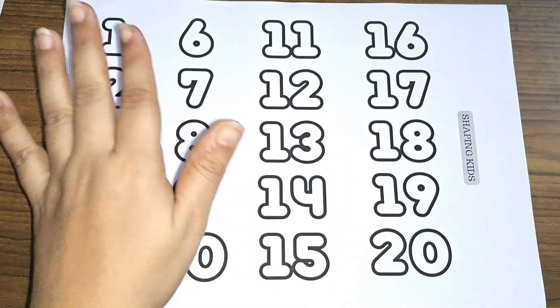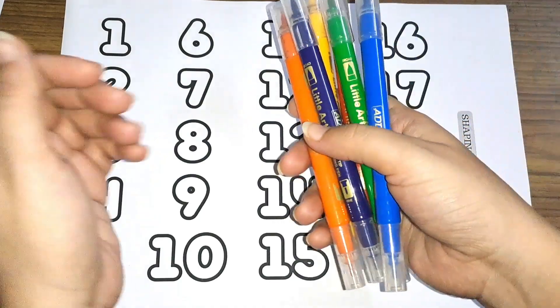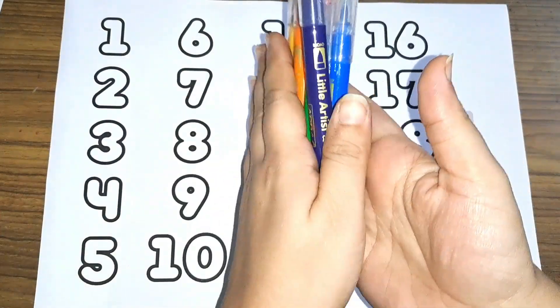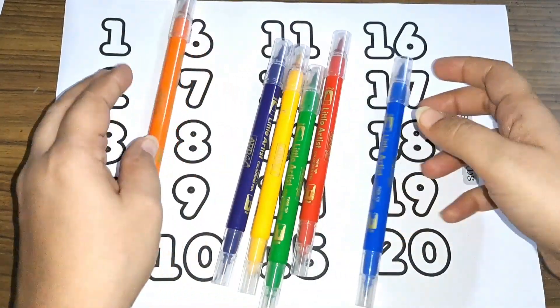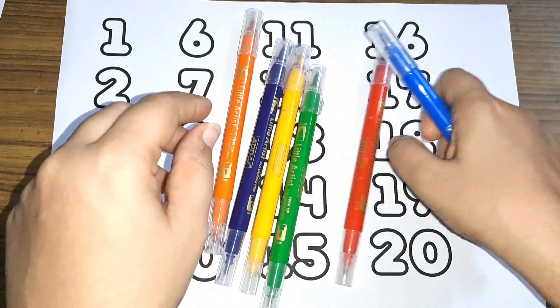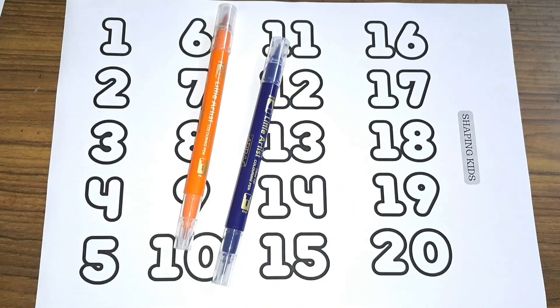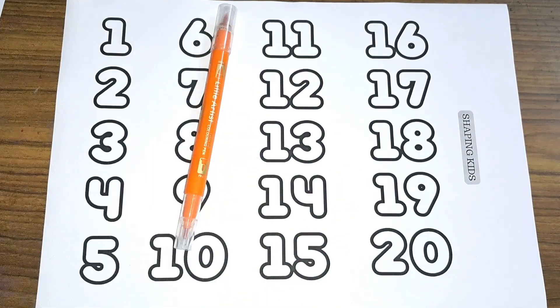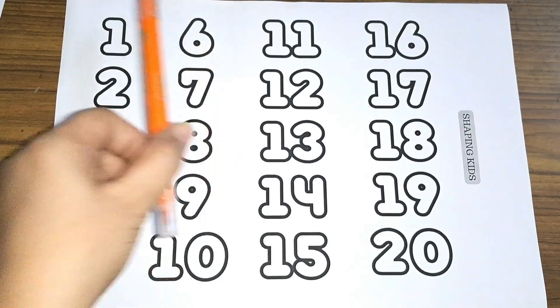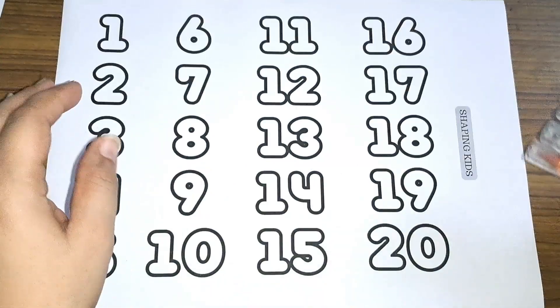Hey kids, let us learn some numbers today. But first, let us learn some colors. These are the colors: blue color, red color, green color, yellow color, purple color, and orange color. These are the colors. Now let us learn some numbers.